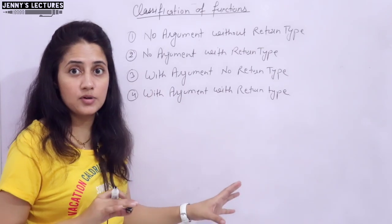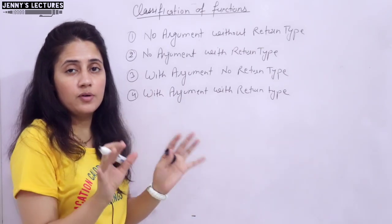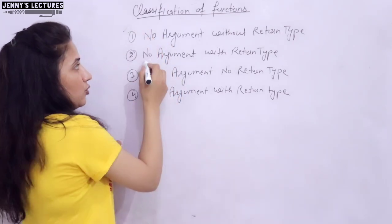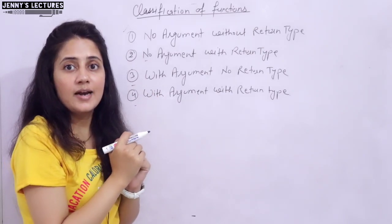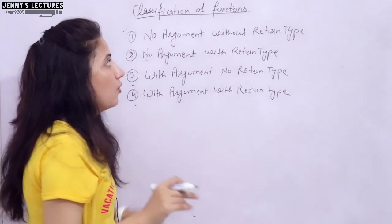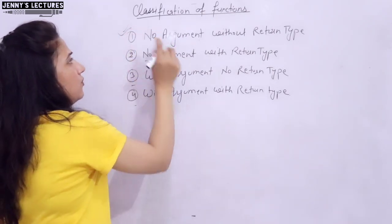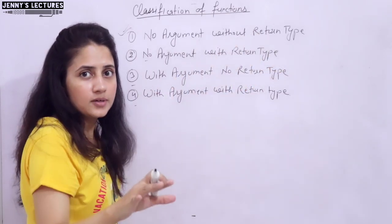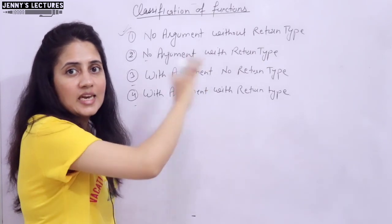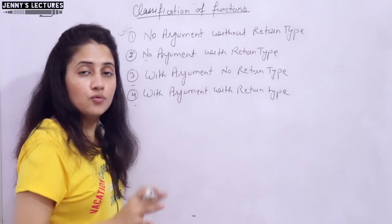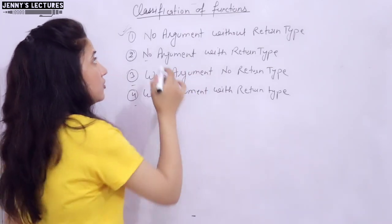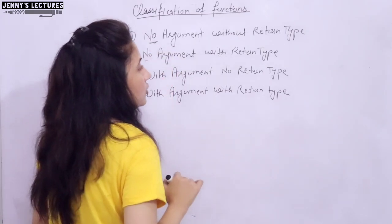Any function in any programming language, whenever you declare or define a function, it must fall into one of these four categories. In this video, we will discuss the first category: a function with no argument and no return type. It will neither accept any argument nor return anything when you call it. We will discuss all categories one by one with proper programs and practical demonstrations.